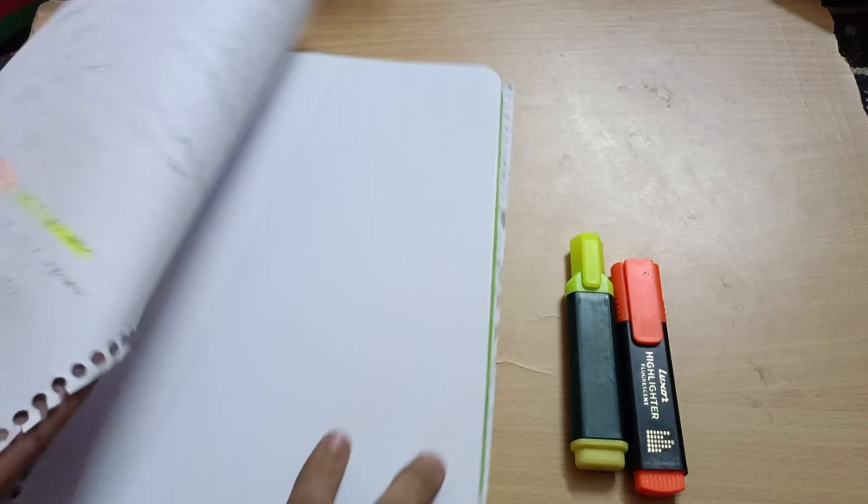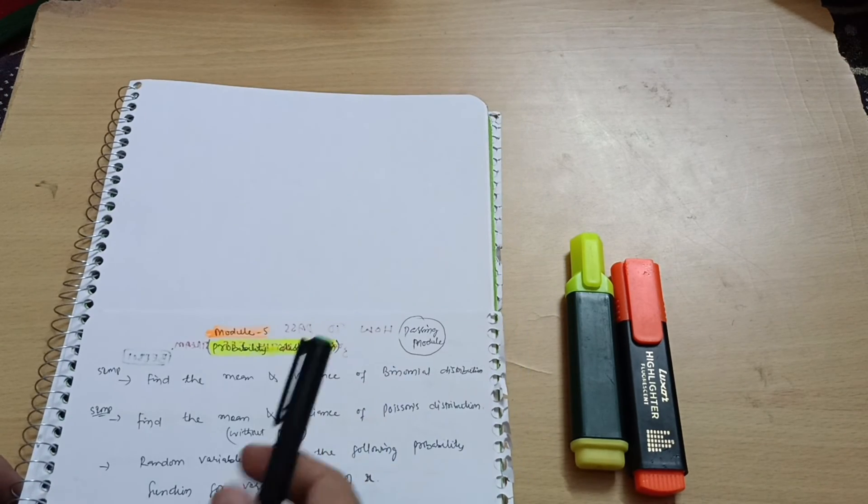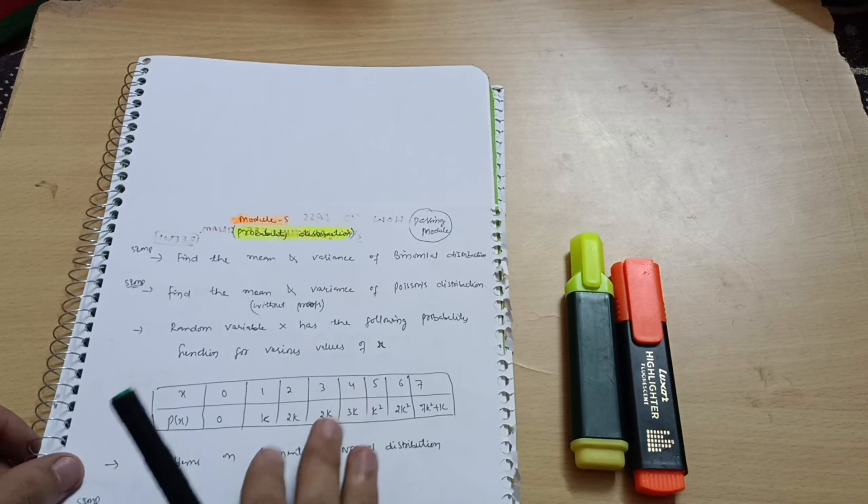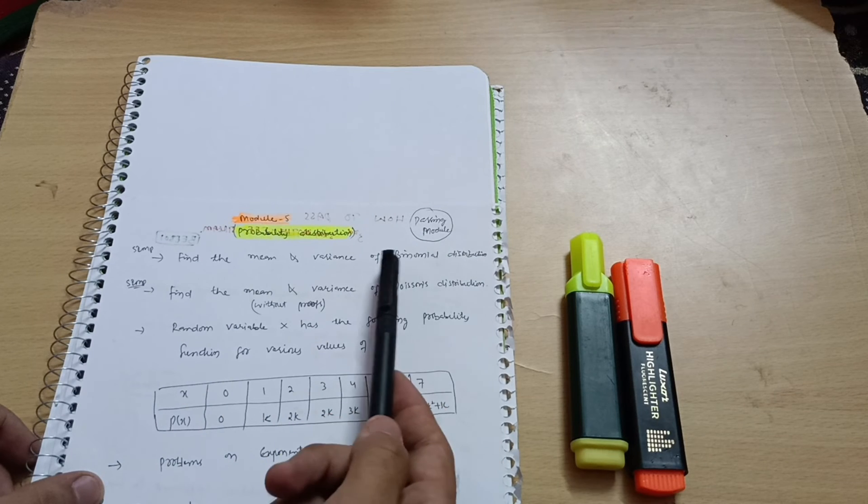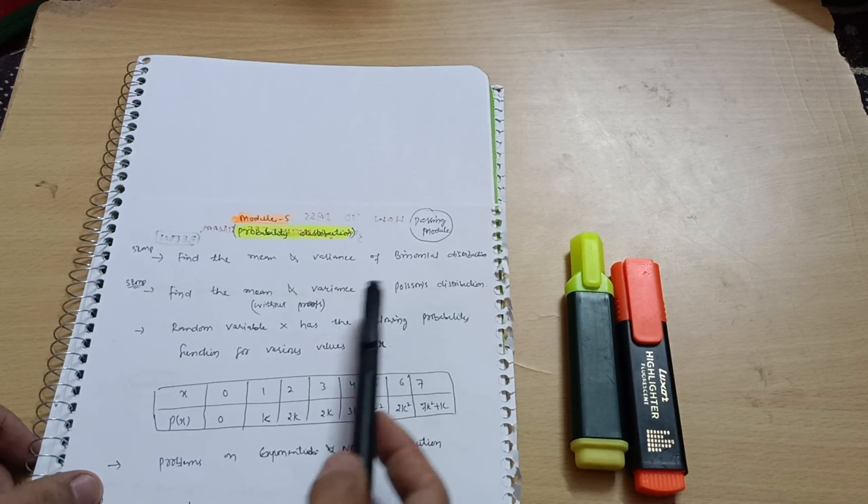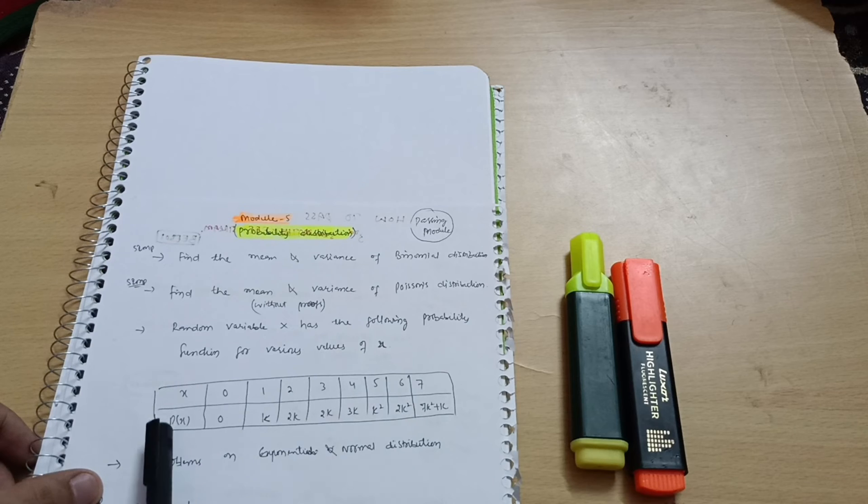Next is Module 5 which is the passing module also. It is the probability distribution in which you have to cover some theoretical questions also and some problems like find the mean and variance of the binomial distribution. You have to go through the problems on binomial distribution, Poisson's distribution, and the questions will be like random variable x has the following probability function for various values of x.